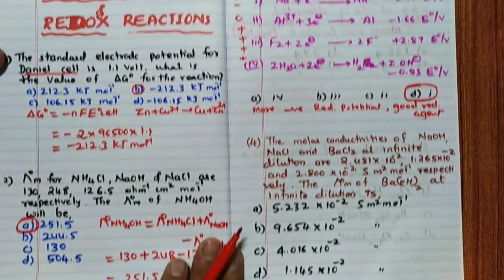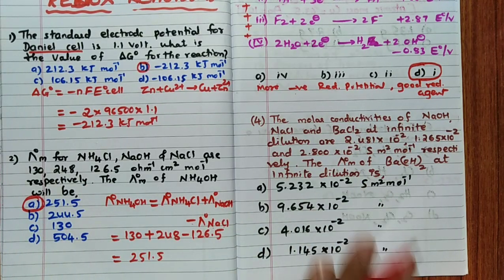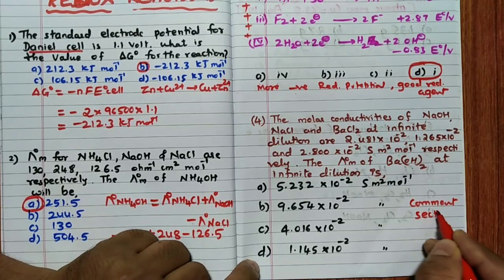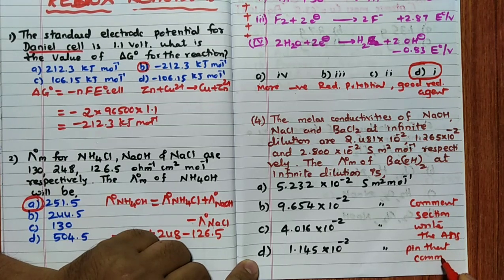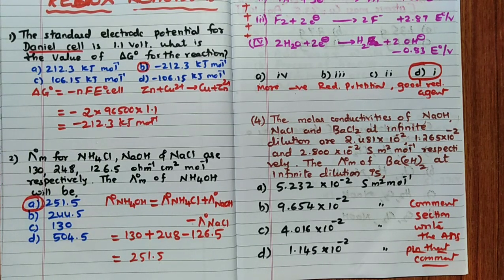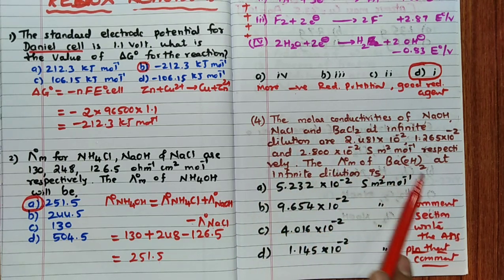The fourth question is very similar to the second question. I will not solve it here — you have to calculate the answer yourself using the same Kohlrausch's law formula. The data given includes NaOH, NaCl, BaCl2, and Ba(OH)2. Post your answer in the comment section, and I will pin the first correct answer.